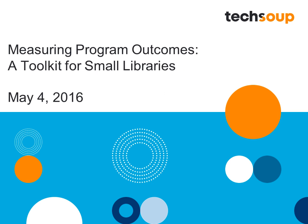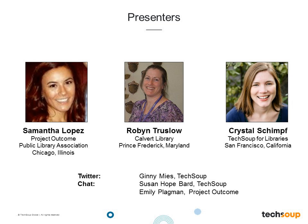Thanks for joining us for today's TechSoup for Libraries webinar, Measuring Program Outcomes: A Toolkit for Small Libraries. We have two guests today. Samantha Lopez joins from the Public Library Association in Chicago, where she is a Project Coordinator for Project Outcome. Robin Truslow joins us from Prince Frederick, Maryland, where she coordinates adult programming and manages public relations at the Calvert Library. Assisting us with chat and Twitter, we have Ginny Meese and Susan Hope Bard from TechSoup, and Emily Plowman from PLA and Project Outcome responding to questions as they arise. We'll also be on Twitter using the @TechSoupforLibs handle.